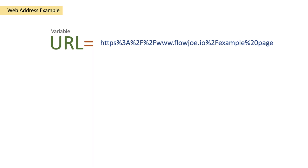The URL within that variable is: https%3A%2F%2Fwww.flowjo.io%2Fexample%20page. It's not very human readable, but what it's using is URL-safe characters.